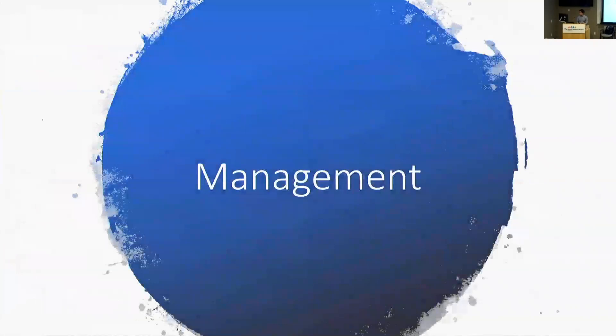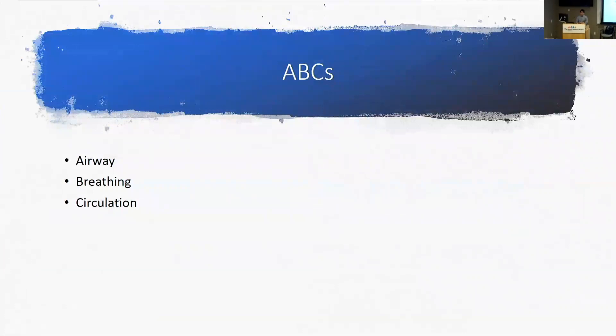Moving toward management: first, always do ABCs — airway, breathing, circulation. In DKA, this matters because kids can come in lethargic and obtunded, so assess whether they're protecting their airway and maintaining adequate respiratory drive. These kids are often profoundly dehydrated, so circulation can be compromised. Address all of these before moving on to anything else.